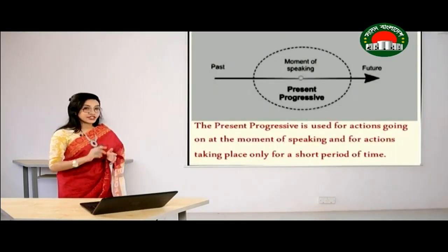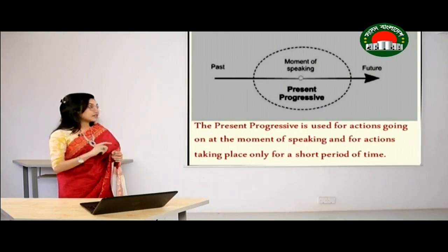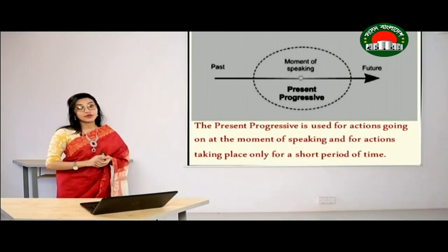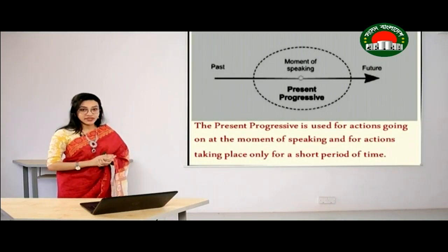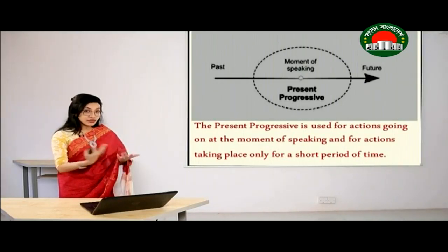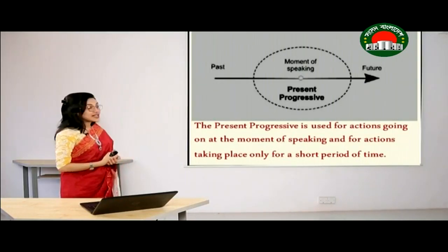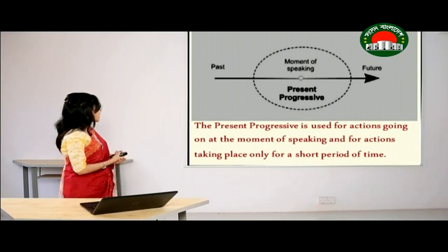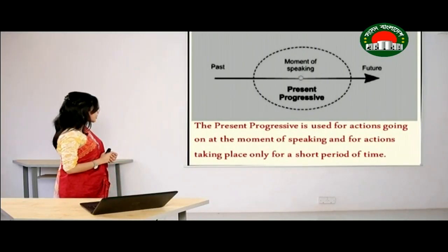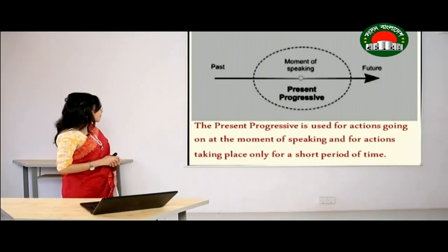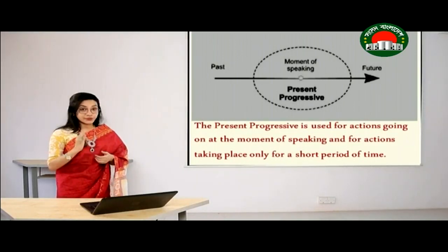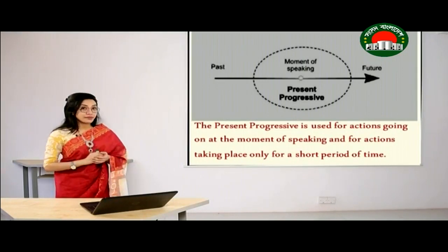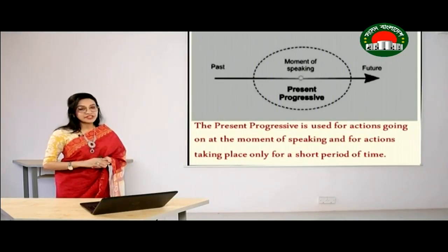Now, in this picture, we can see a straight line and there is a circle around 'present progressive.' That means when we are speaking right at that moment, the events happening around it are known as present continuous. The present progressive is used for actions going on at the moment of speaking and for actions taking place only for a short period of time — meaning the action is temporary.